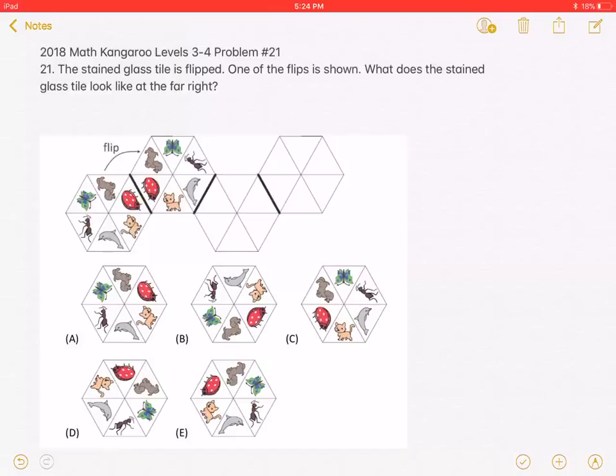This is the 2018 Math Kangaroo Levels 3-4, problem number 21. The stained glass tile is flipped. One of the flips is shown. What does the stained glass tile look like at the far right?